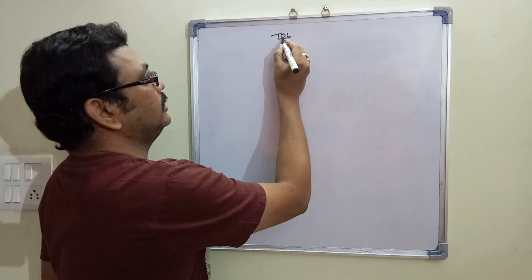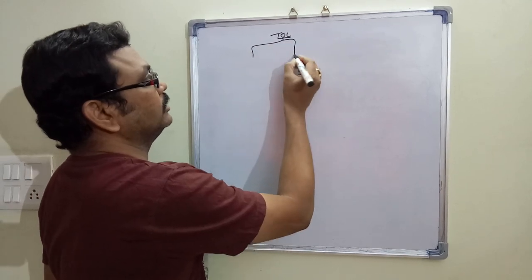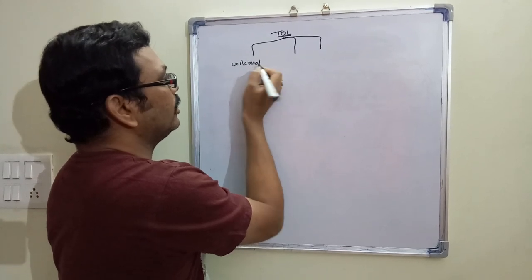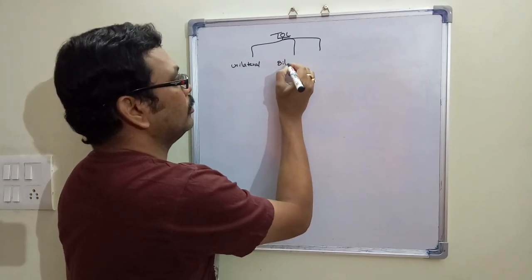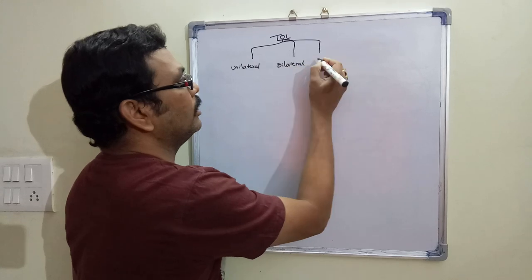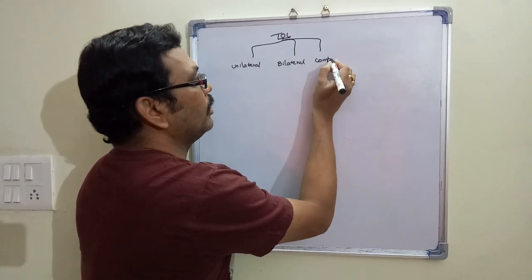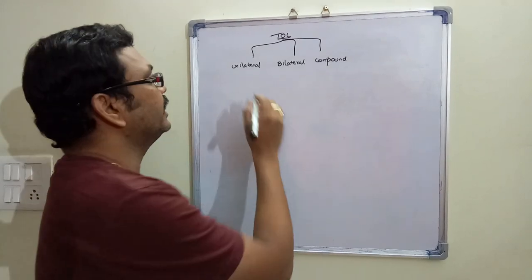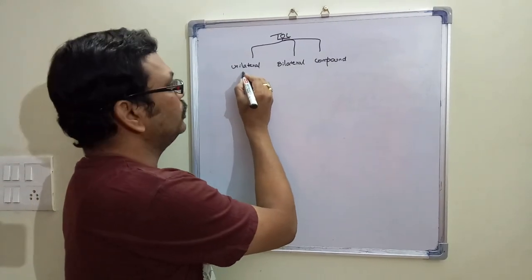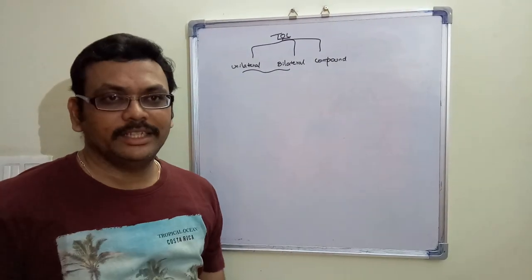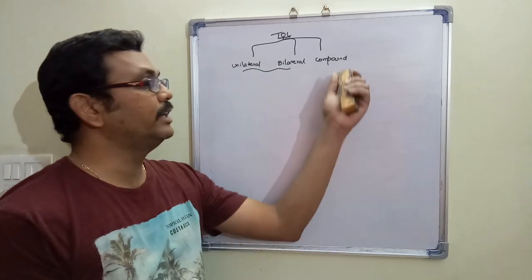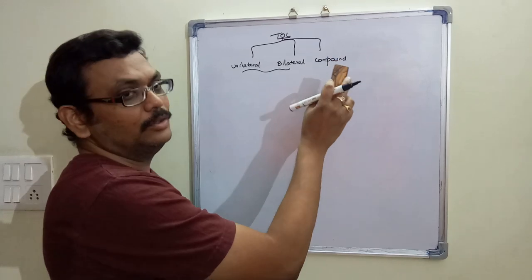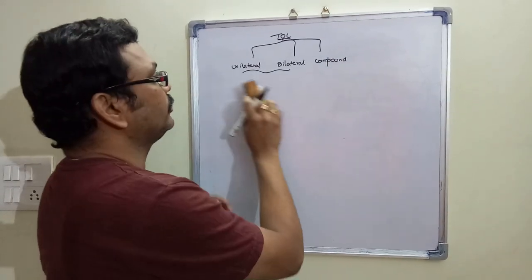There are three types of tolerances: unilateral, bilateral, and compound. In most manufacturing cases we use only unilateral and bilateral. Compound tolerance is used in very rare situations.